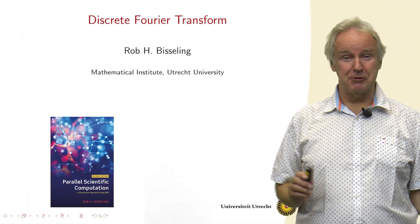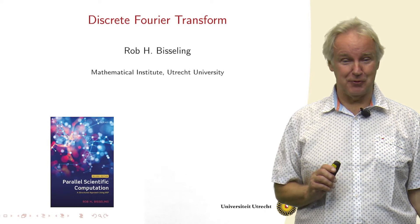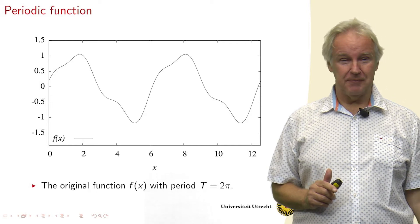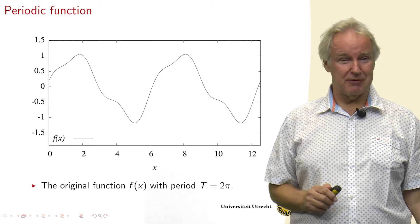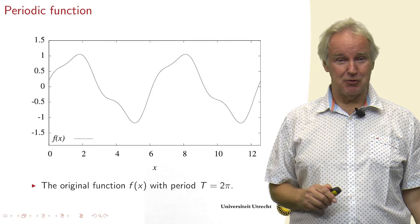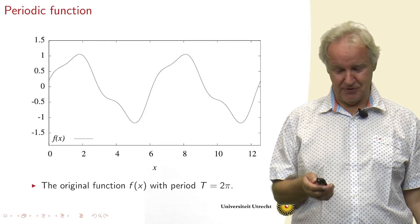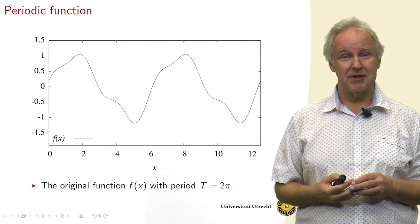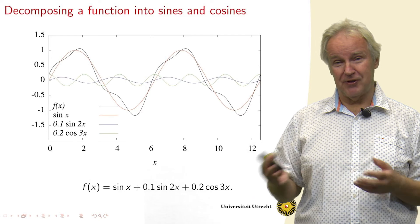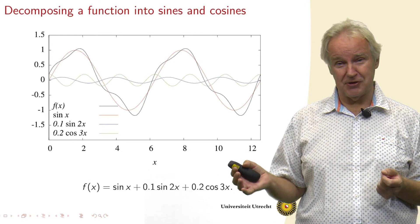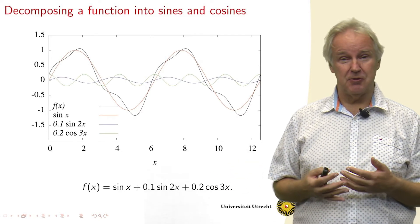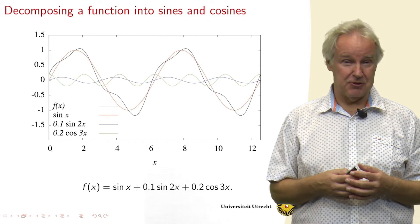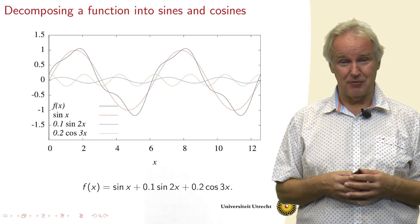In this video we are going to meet the discrete Fourier transform. Here we see a periodic function which repeats itself after a period of 2 pi. So you see a few of the cycles of this function. And we can ask ourselves, how does this function decompose into sines and cosines? So for a well-behaved function we can do this, that's the Fourier analysis.